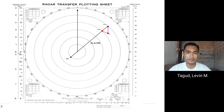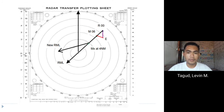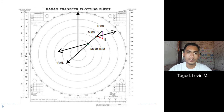We find MX by measuring 4 nautical miles from our own ship along the relative motion line on the plotting sheet. Since we need a CPA of 2 nautical miles on the port side, we connect MX to the 2 nautical mile range point from our ship to form the new relative motion line. After plotting the new RML, we transfer it to point M.